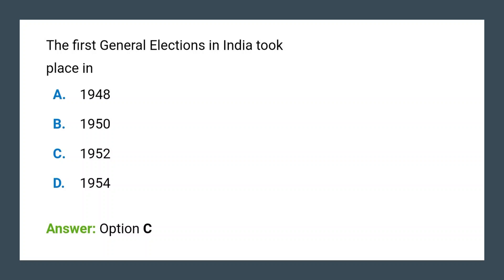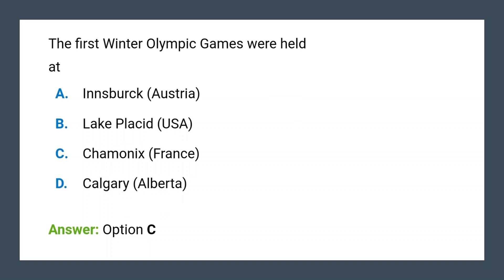Next question: Where were the first Winter Olympic Games held? The first Winter Olympic Games were held at Chamonix, which is in France.